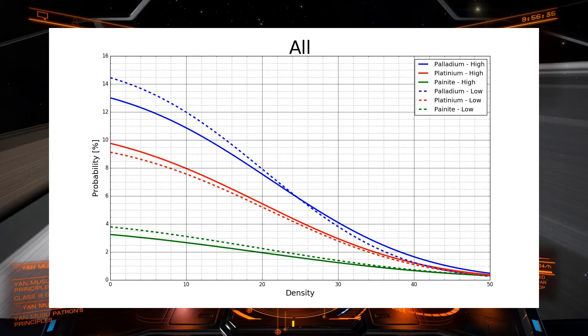I mean, we're looking at a quarter percent, half a percent maybe sometimes. And if you even look at that graph, it should be more likely to get the high density platinum in the high density areas where the rocks are closely packed.